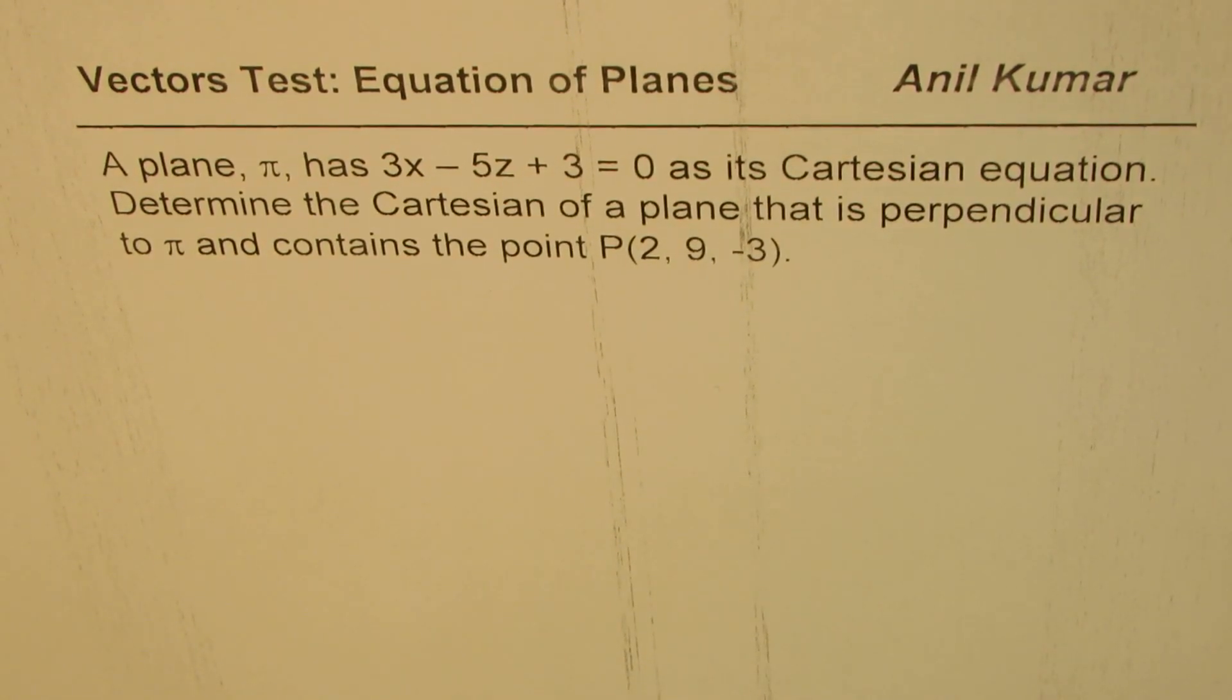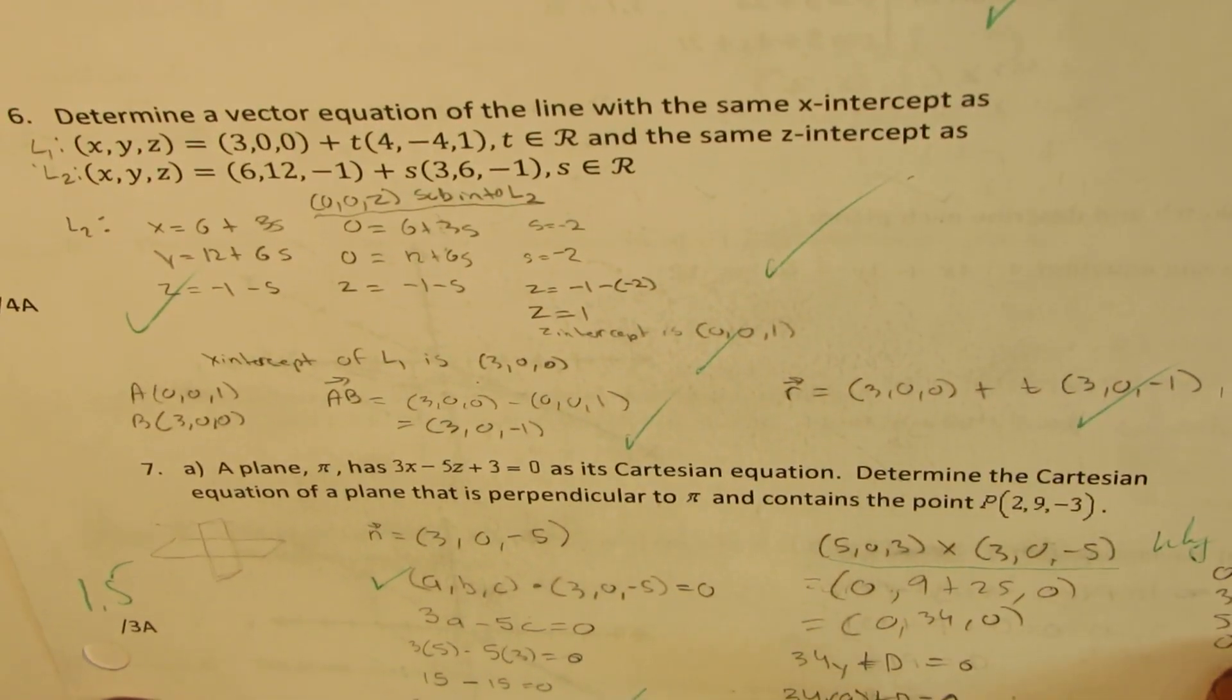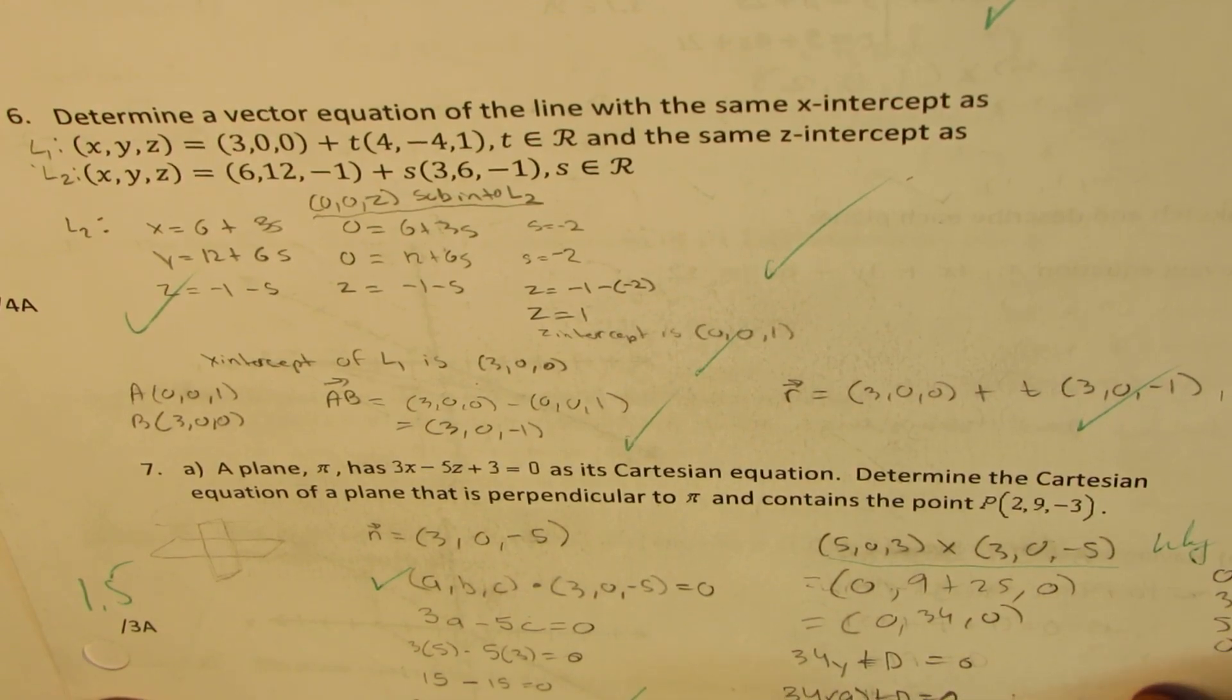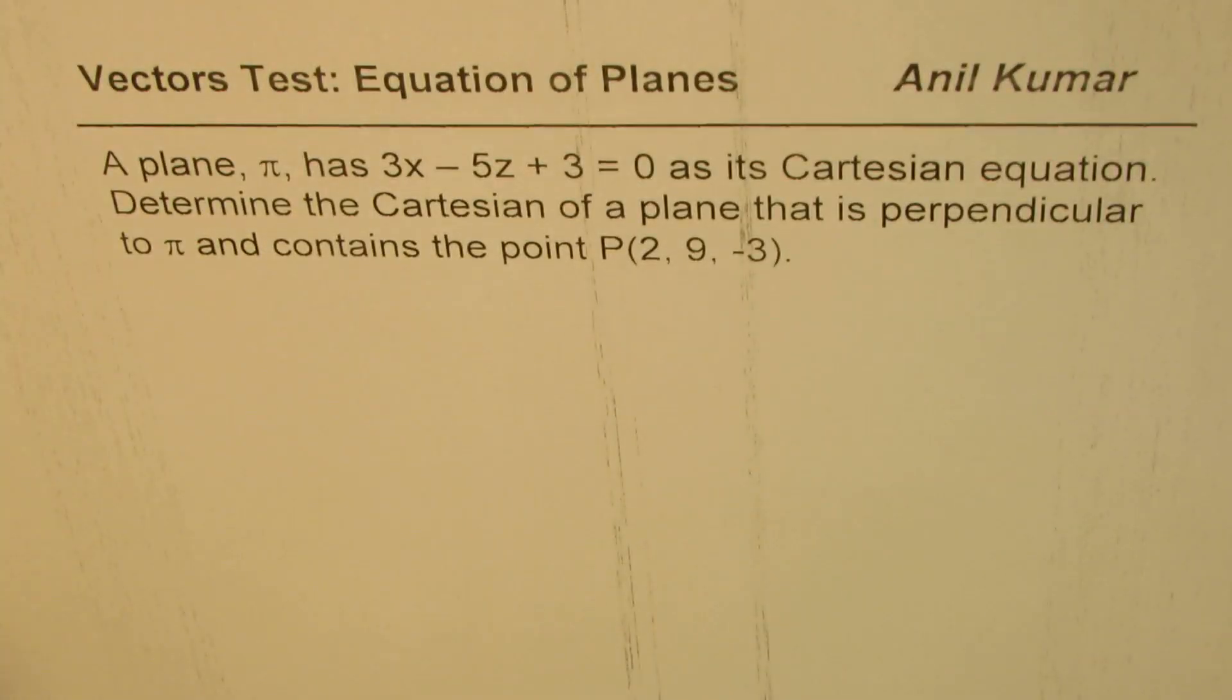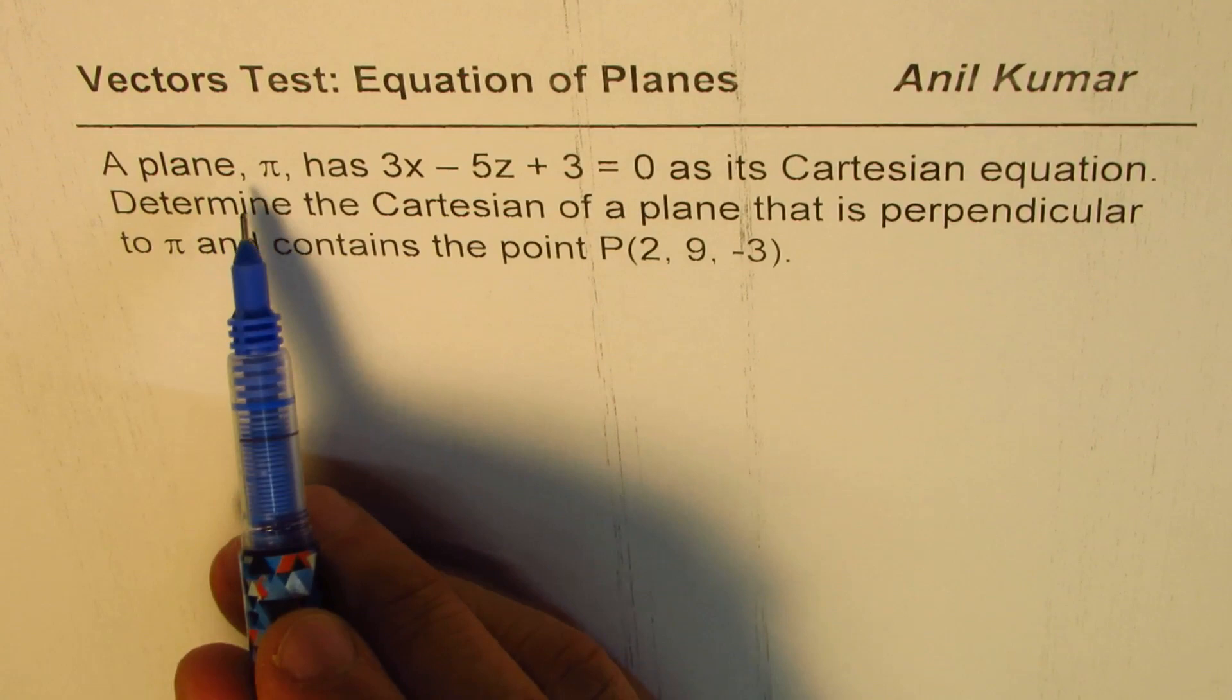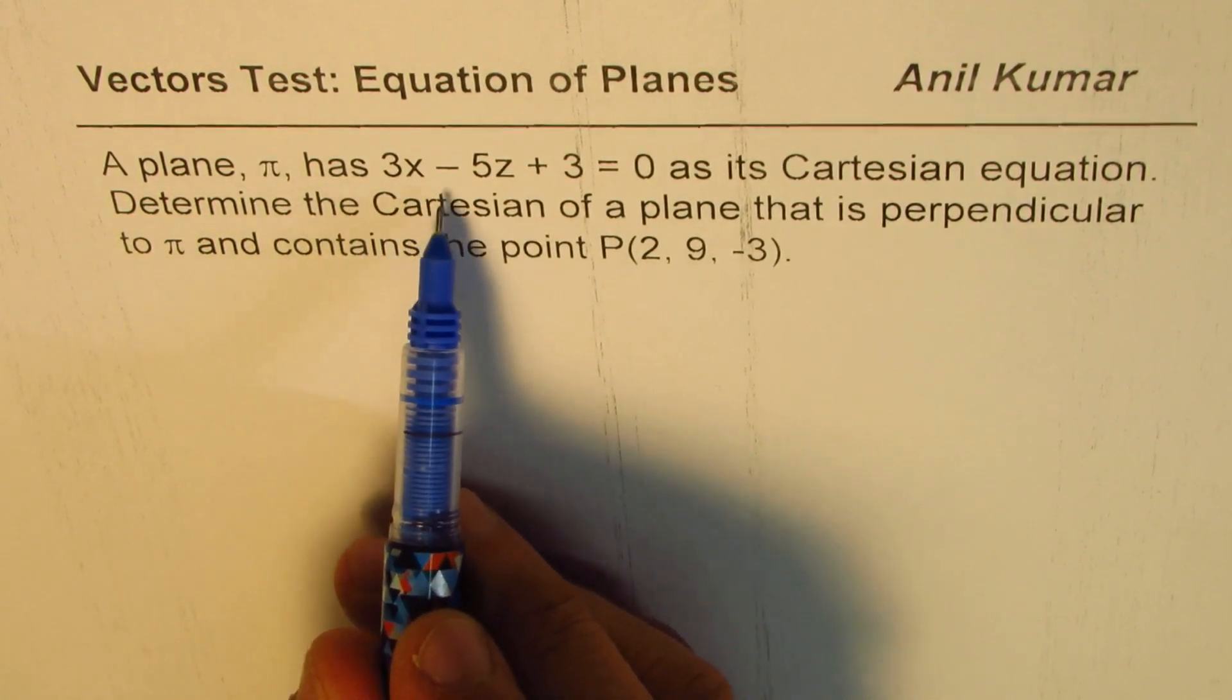I'm Anil Kumar sharing with you a test question on vectors equation of planes. Here is question number seven which we are going to discuss in this particular video. The question is: a plane π has 3x - 5z + 3 = 0